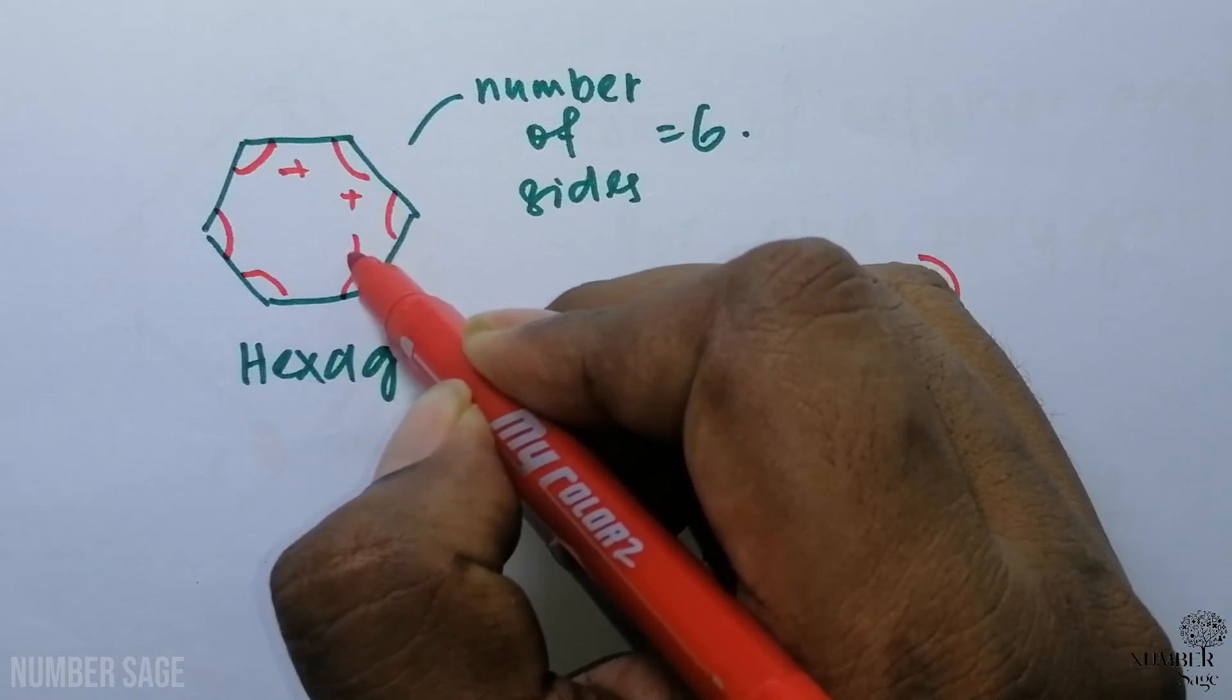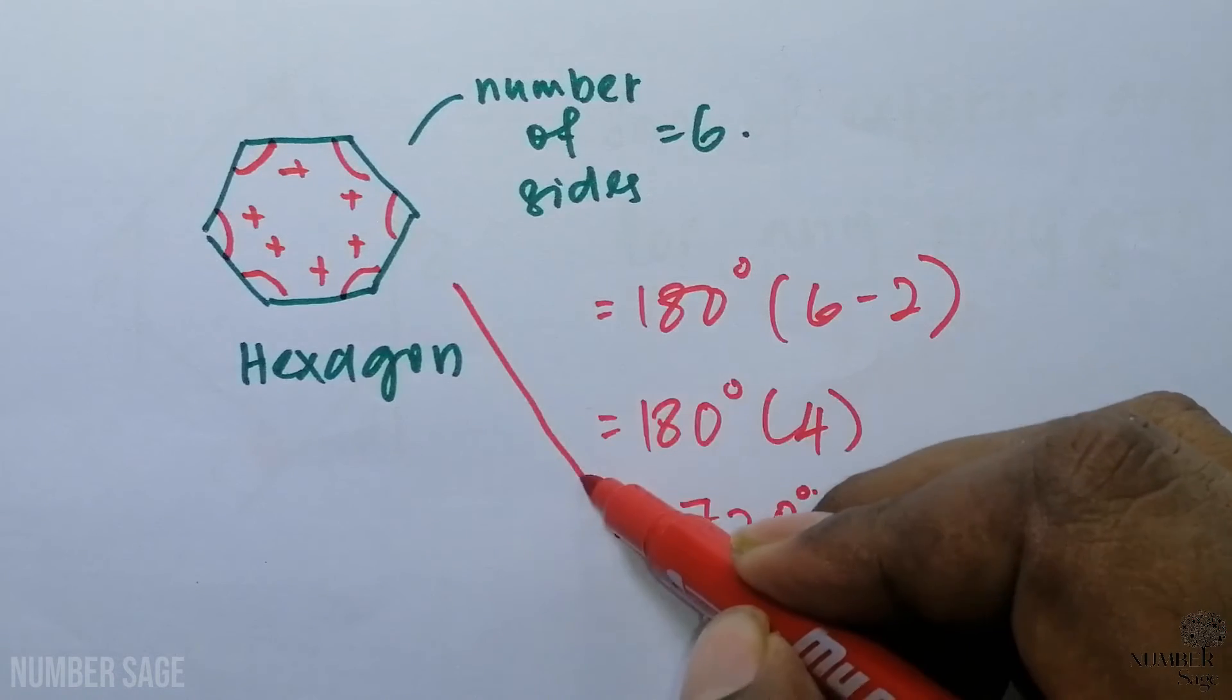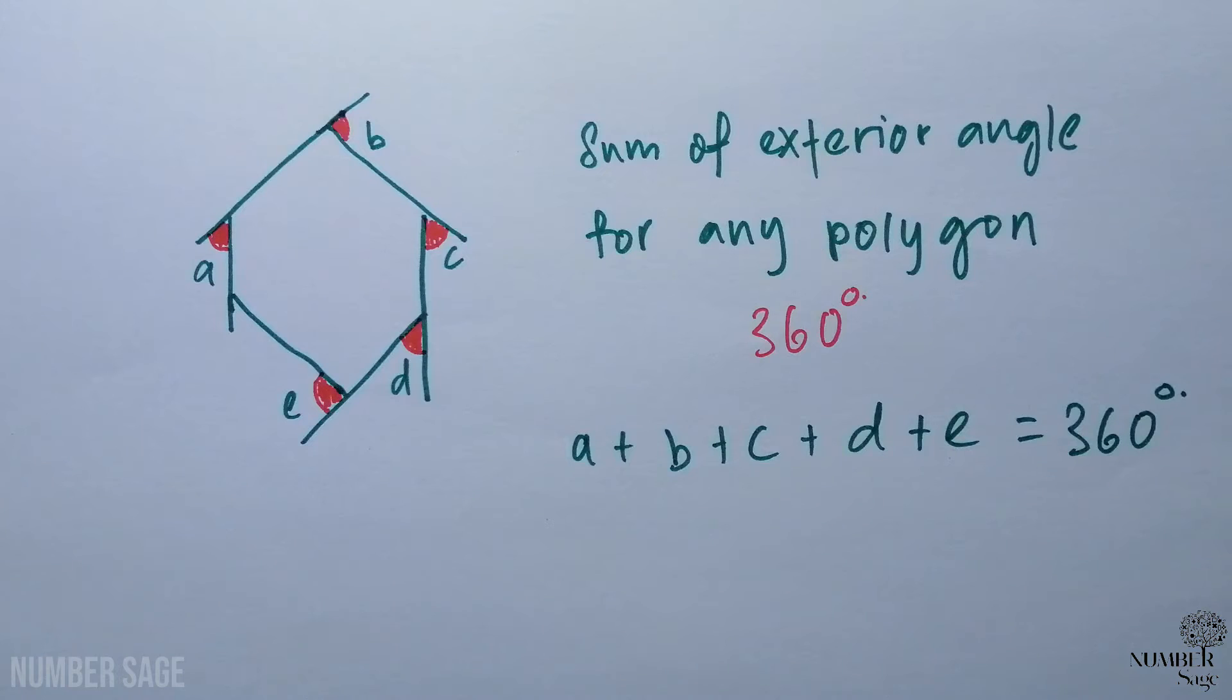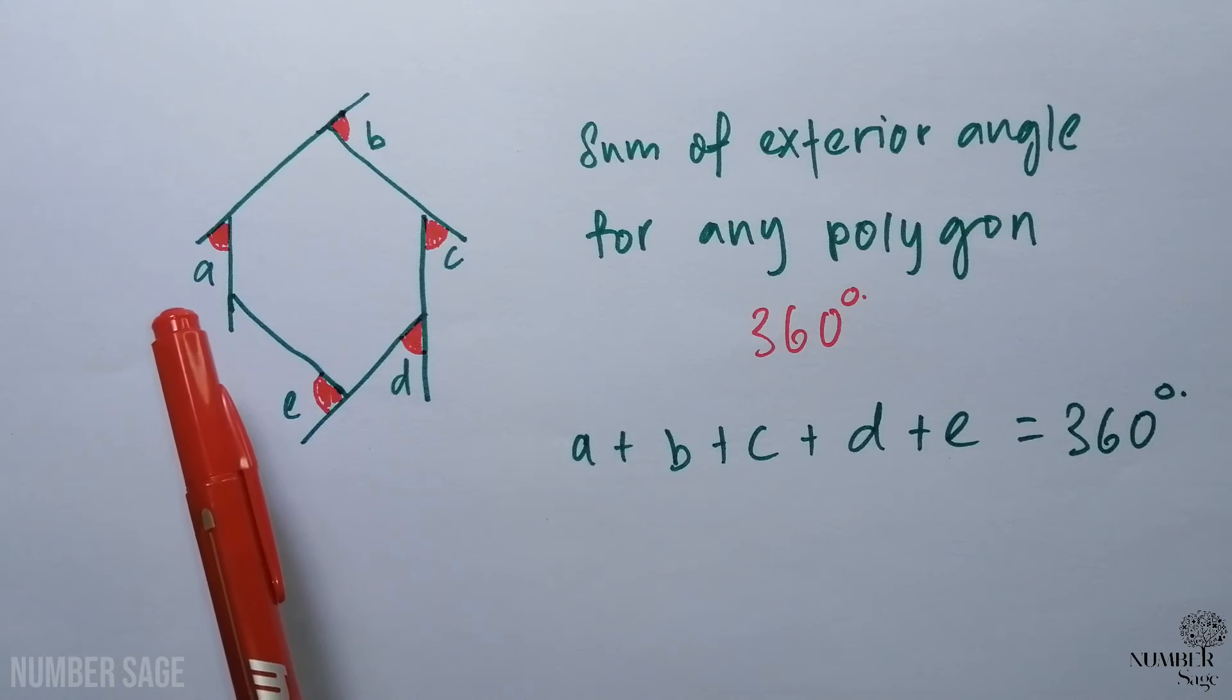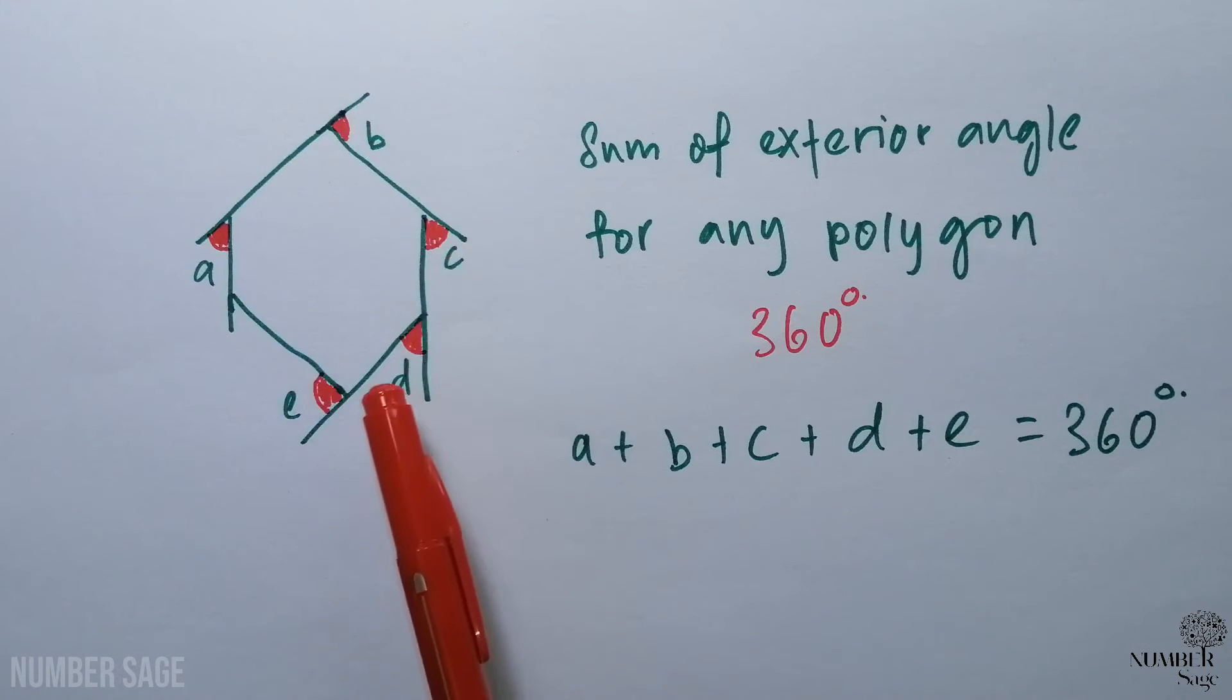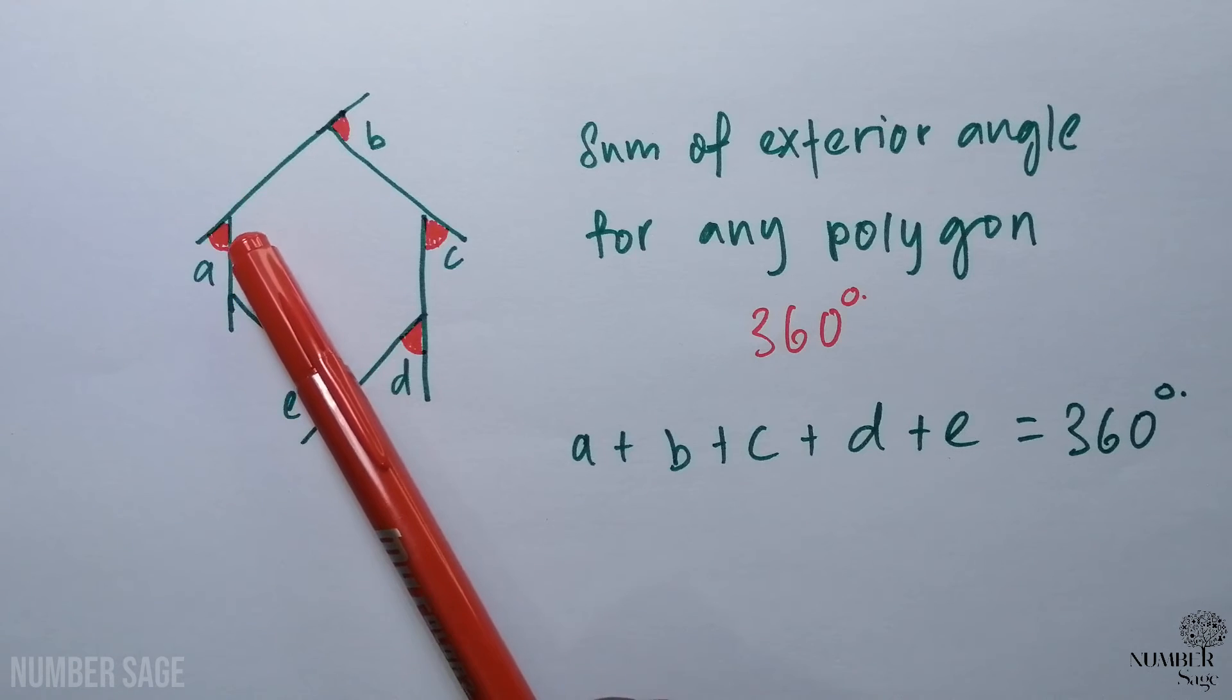Now let's look at the second point, which is the exterior angle. Exterior angle denotes the angles that are outside of the polygon. For example, in this case, a, b, c, d, and e are exterior angles. Whatever angles that are inside are known as interior angles, and whatever angles that are outside of the polygon are known as exterior angles.